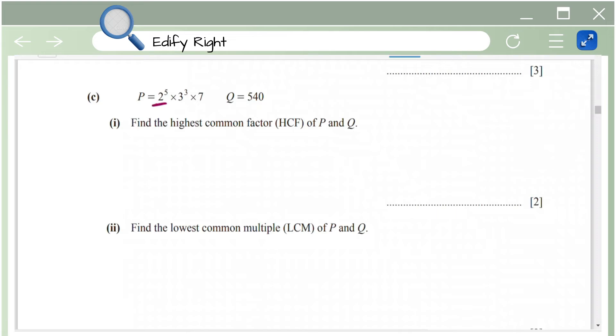Next we have p equals 2 power 5 into 3 power 3 into 7, q equals 540. Find the highest common factor of p and q. So let me just first write this in terms of factors. So 540 can be written as 2 power 2 into 3 power 3 into 5.